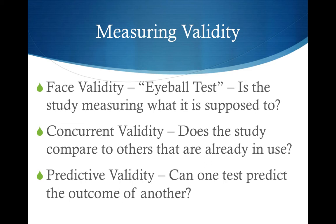There are three ways of measuring validity. One is face validity, also known as the eyeball test — is the study measuring what it is supposed to measure? Can you read the study and are the results and findings based on what the study was meant to measure in the first place. Another one is concurrent validity — does the study compare to other studies that are already in use? So can you compare your study with another similar study. And the last is predictive validity — can one test predict the outcome of another test? Basically, can the results of one test predict the results of another.